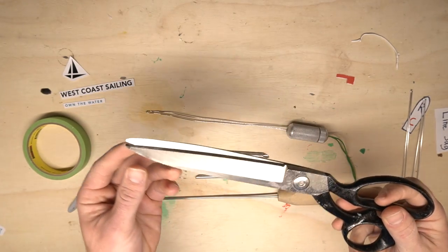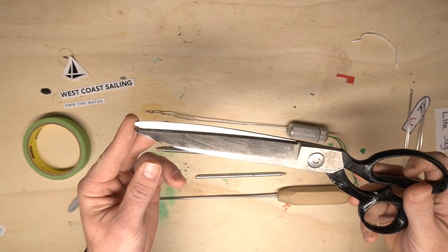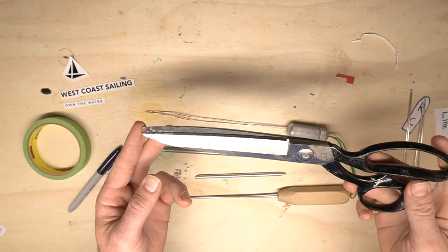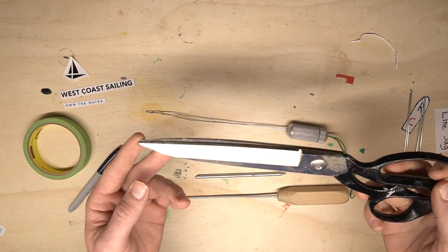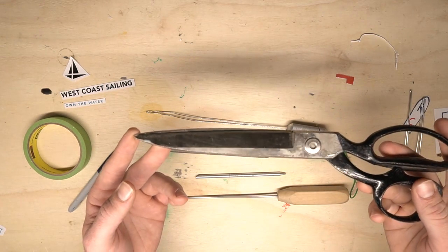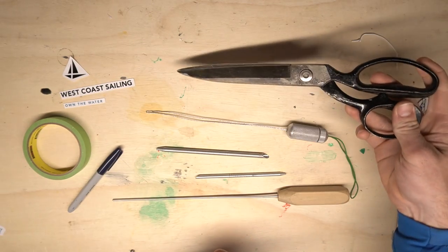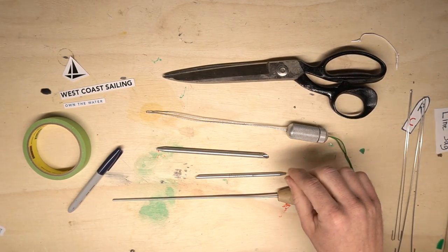For doing your tapers, especially if you're working with things like Spectra or Vectran, Technora, anything that's got a high abrasive-resistant quality piece of rope, the better set of scissors you're going to need. Fids are probably the next most important piece of kit.